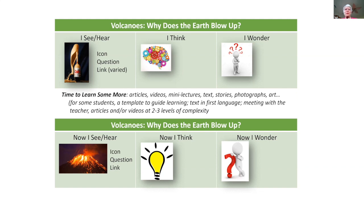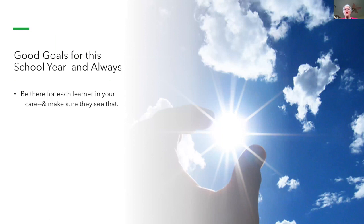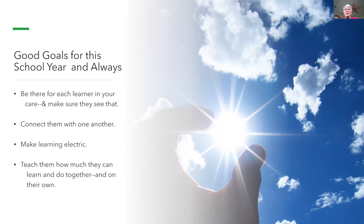That's a great deal of information in a large hurry. Summary: be there for your kids this year. Make sure they see and feel that you care. Connect them with one another. Make learning electric and teach them how much they can learn together and on their own — and it'll be a pretty good year. Thank you so much for that, Carol — a treasure trove of ideas and strategies, and thank you for clarifying what differentiation is and isn't, because we often get muddled between those two spaces.